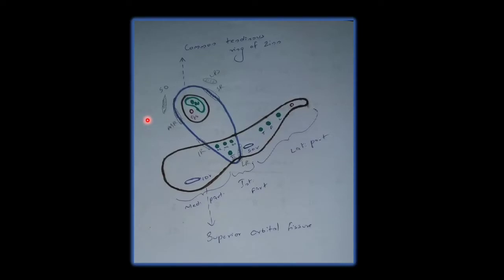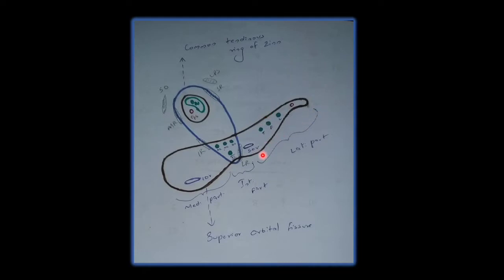This figure is very important. I have discussed this already when we learned about the middle cranial fossa, so please go through that video for more detail. There is a common tendinous ring for the four recti muscles of the eyeball that divides the superior orbital fissure into three parts — the lateral part, intermediate part, and medial part.